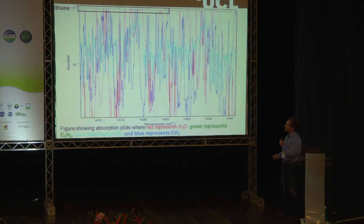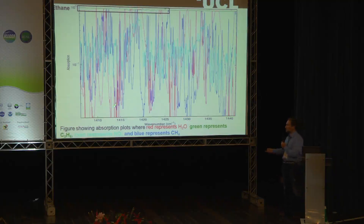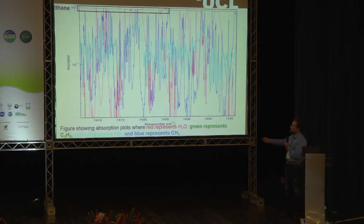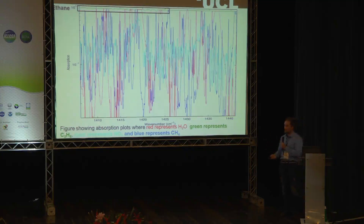Moving on to ethane in a slightly shorter wave range — around 6 micrometers, shown here in wavenumbers. The key absorbing gases here are water vapor in red, green is ethane, cyan is NO2, and blue represents methane. In the HITRAN database, ethane is the strongest absorber across most of the spectrum. But when it comes to simulating the atmosphere, we'll see that this is not quite the case.